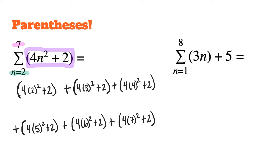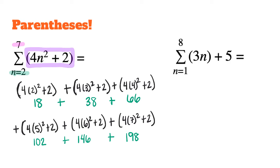Here you can see I wrote it all the way out, plugging in 2 where I started through to 7. Simplifying before summing: 2 squared is 4, times 4 is 16, plus 2 is 18. Then 3 squared is 9, times 4 is 36, plus 2 is 38. Continuing: 4 squared is 16, times 4 is 64, plus 2 is 66. The remaining values are 102, 146, and 198. Adding all the values together gives a grand total of 568.